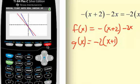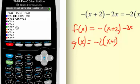Now let's take a look at the graph. This is a colored calculator, so you can see each line is a different color. We can go back to y equals and see which one's which.